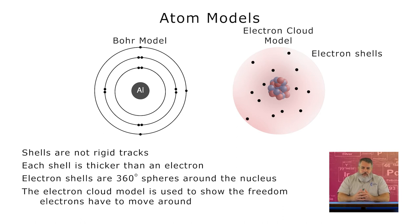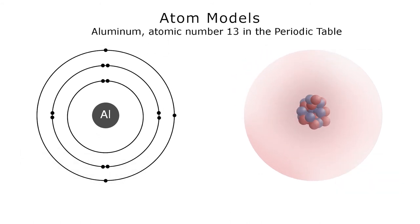Sometimes electrons are drawn within the cloud of the electron cloud model, and sometimes they aren't. The two models are shown in figure 3.6.1. I drew the two models using the element aluminum, which is element number 13 in the periodic table.